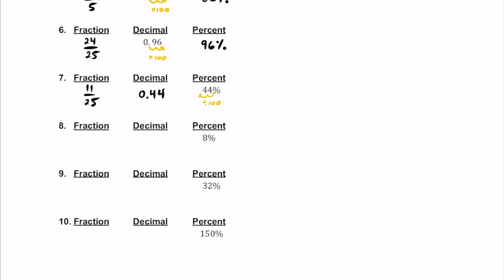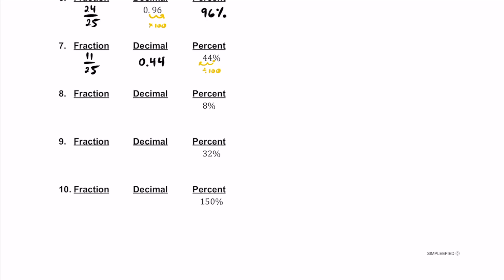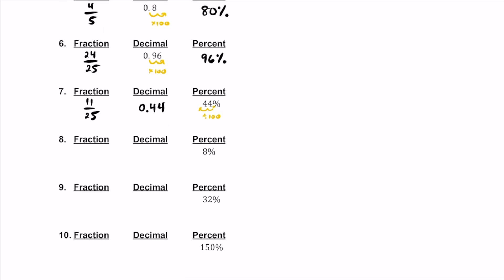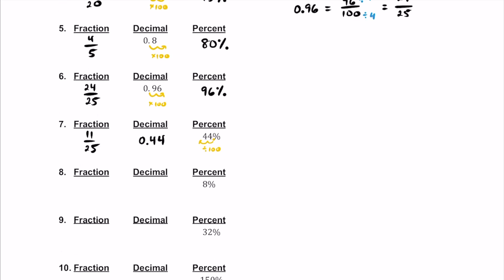For number 8, we have 8%. So 8% is really just 8 over 100. I'll do the decimal first. Here's the decimal at the beginning — if we want to make it a decimal, let's divide it by 100, or move it twice to the left. So as a decimal, it's going to be 0.08.